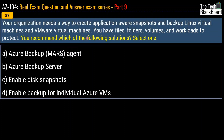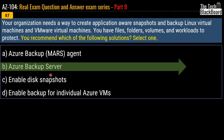Coming to question number 87: your organization needs a way to create application-aware snapshots and backup Linux virtual machines and VMware virtual machines. You have files, folders, volumes and workloads to protect. Which of the following solutions do you recommend? Your options are: Azure Backup Agent, Azure Backup Server, Enable Disk Snapshot, or Enable Backup for individual Azure VMs. The correct answer for this question is option B — Azure Backup Server.